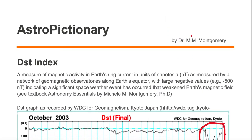So the DST index is a measure of magnetic activity in Earth's ring current, and large negative values indicate that a significant space weather event has occurred.